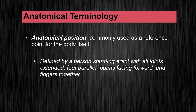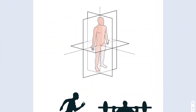In order to better understand our system, we need to know about some anatomical terminology. The first thing to know is anatomical position. It's the most common reference position and it's defined as a person standing erect with all joints extended, feet parallel, palms facing forward, fingers together. I have a picture of it right here — somebody standing in anatomical position.